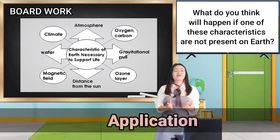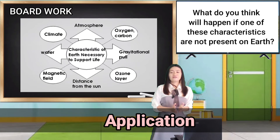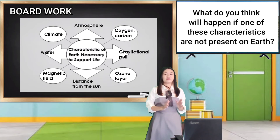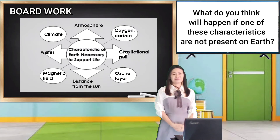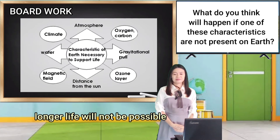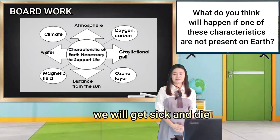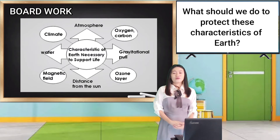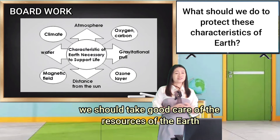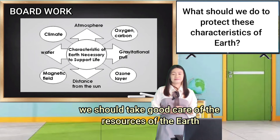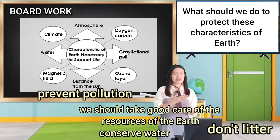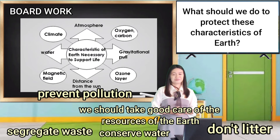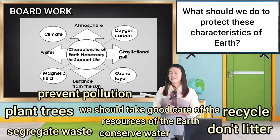What do you think will happen if one of these characteristics are not present on Earth? Longer life will not be possible. We will get sick and die. What should we do to protect these characteristics of Earth? We should take good care of the resources of the Earth. Conserve water. Don't litter. Prevent pollution. Segregate waste. Recycle. Plant trees.